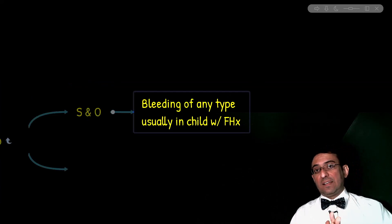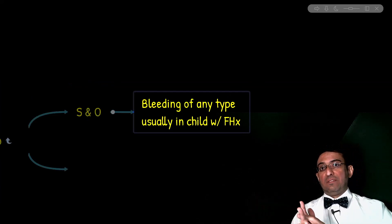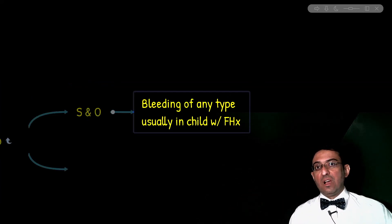Most important factors that help argue in favor of diagnosis of von Willebrand disease is, one, presence of family history, and two, bleeding that worsens or manifests with use of aspirin or other NSAIDs.